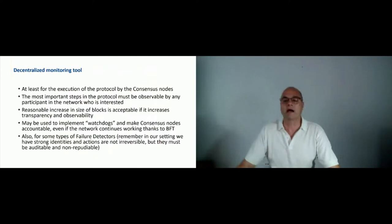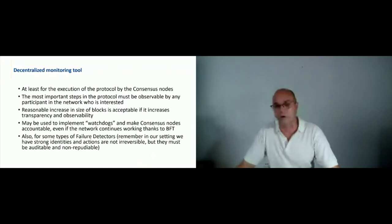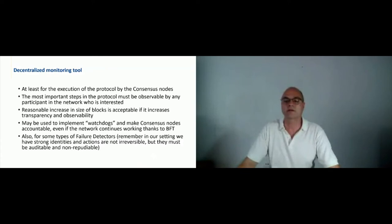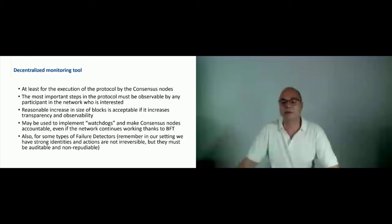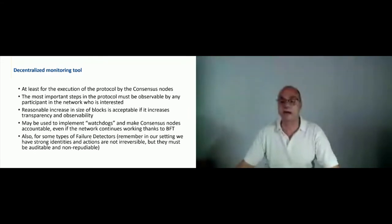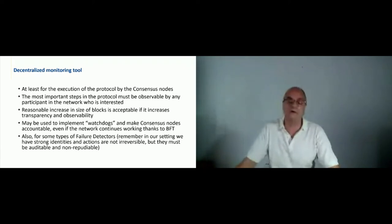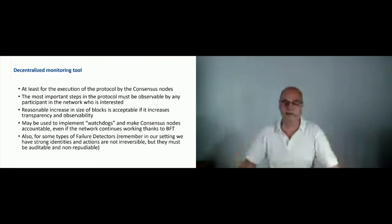We also need a decentralized monitoring tool at least for the execution of the protocol by the consensus nodes, to increase trust from regular peer nodes. We need radical transparency in the most important steps in the protocol. Normal BFT consensus implementations are designed to mask failures and continue working, but what we want is that those failures — even if the network continues working — are visible to any participant. To avoid possible censorship of that information, some trace information would have to be piggybacked into the blocks. This allows the implementation by regular nodes of watchdogs, monitoring bodies, or failure detectors to collaborate in the resiliency and neutrality of the network.